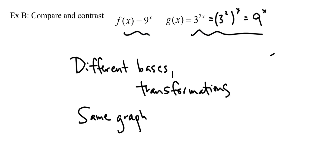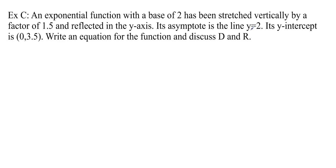Okay, so last example, example C. An exponential function with a base of 2 has been stretched vertically by a factor of 1.5 and reflected in the y-axis. Its asymptote is line y equals 2 and has a y-intercept of (0, 3.5).